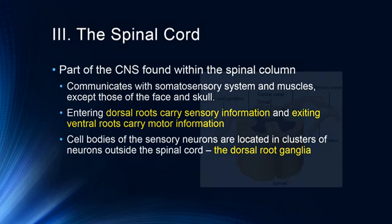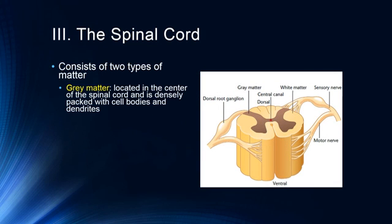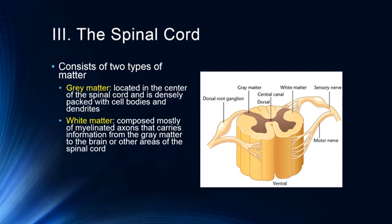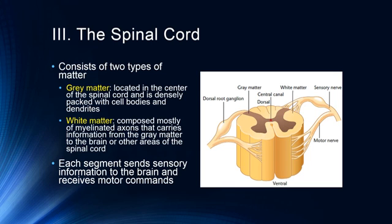The spinal cord consists of two types of matter. Gray matter is located in the center of the spinal cord and is densely packed with cell bodies and dendrites. White matter is composed of mostly myelinated axons that carry information from the gray matter of the brain to other areas of the spinal cord. Myelinated neurons transmit information much more quickly and are involved in faster processes. Each segment of the spinal cord sends sensory information to the brain and receives motor commands.